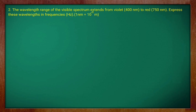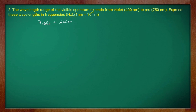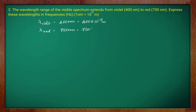Second question: the wavelength range of the visible spectrum extends from violet to red. The wavelength is given as 400 nanometer to 750 nanometer. Express these wavelengths in frequencies in terms of Hz. Note that 1 nanometer is 10 to the power minus 9 meter. So the wavelength for violet light is 400 nanometer, which is equal to 400 into 10 to the power minus 9 meter, and the wavelength for red light is 750 nanometer, equal to 750 into 10 to the power minus 9 meter. First, let us find the frequency for violet light.